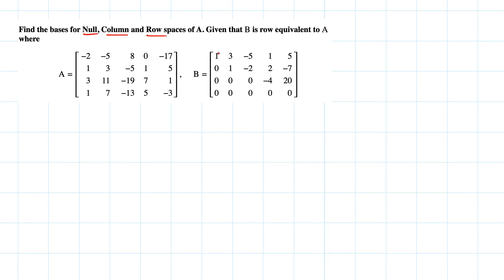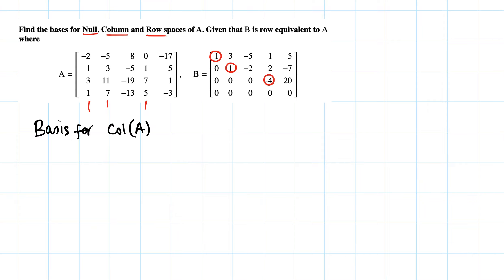Looking at B, the pivots are in the first, second, and fourth columns — there is no pivot in the third or fifth. So the first, second, and fourth are the pivot columns. The corresponding columns from A itself form the basis for the column space of A.